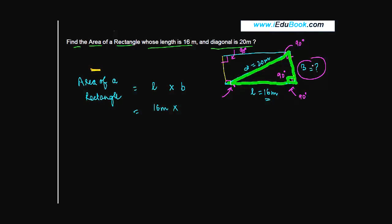This is the breadth, this is the diagonal, this is length. And in a right angle triangle, we know that the hypotenuse square is equal to the base square plus height square.